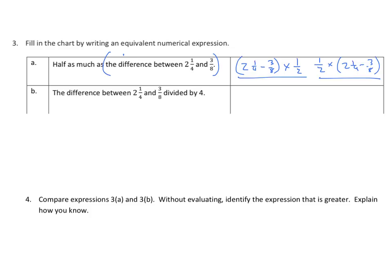Part B: the difference between 2 and 1/4 and 3/8, divided by 4. We have the same numbers and the same operation. So I have (2¼ − 3/8) ÷ 4, which is the same as (2¼ − 3/8) × 1/4.